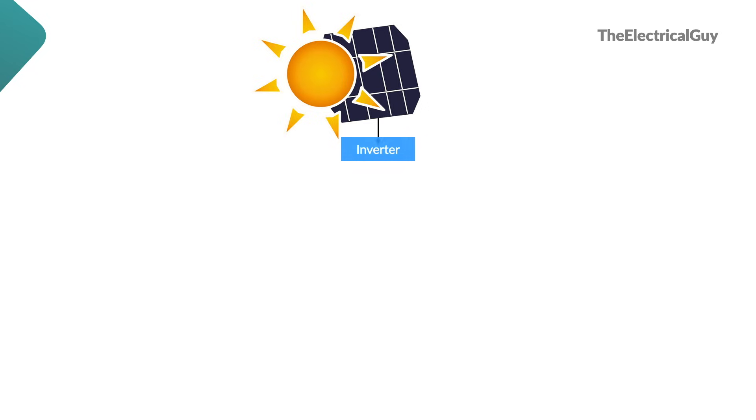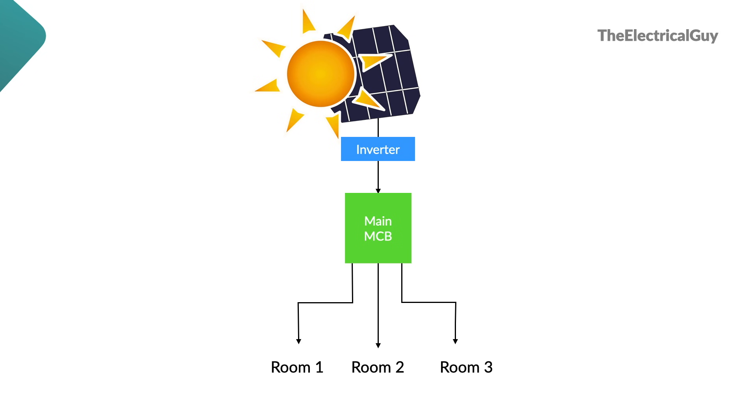It is not necessary that only a big generation, transmission, and distribution network is called a power system. For example, if you have solar rooftop panels, you produce electricity, transmit it to your main MCB box, and distribute it to different rooms. You are covering generation, transmission, and distribution — so that is also a power system. Hospitals and industries often have their own power plants and use their own electricity — that complete system can also be called a power system.